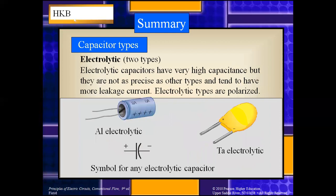The next type is the electrolytic capacitor, which falls into two categories: aluminium electrolytic capacitors and tantalum electrolytic capacitors. These have very high capacitance but are not as precise as other types, and tend to have more leakage current. They are polarized types. They consist of two aluminum foils — one with an oxide film and one without — interleaved with a paper saturated with a suitable electrolytic material.